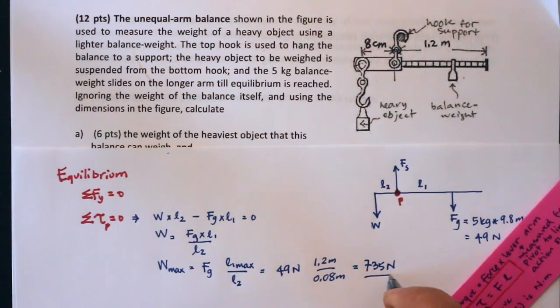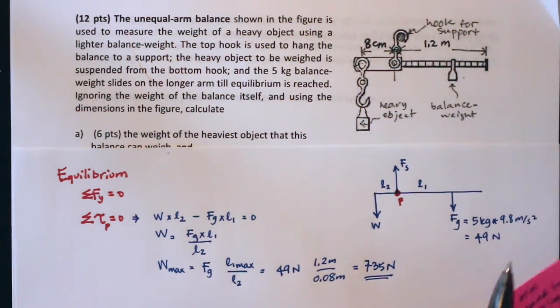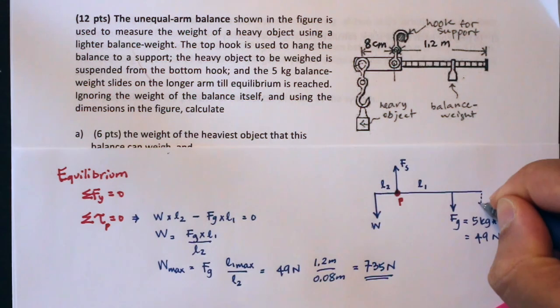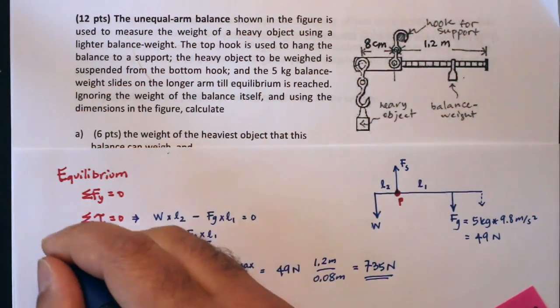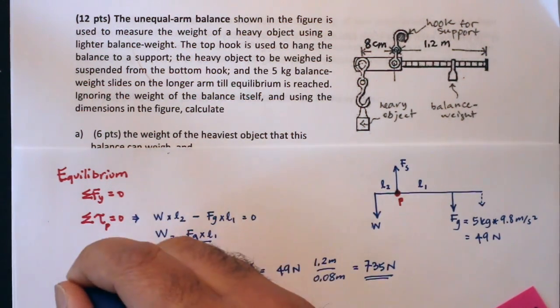So that's the maximum possible weight, and that's when you hang the balance weight right at the tip of the balance arm. So that's what was required for part a.